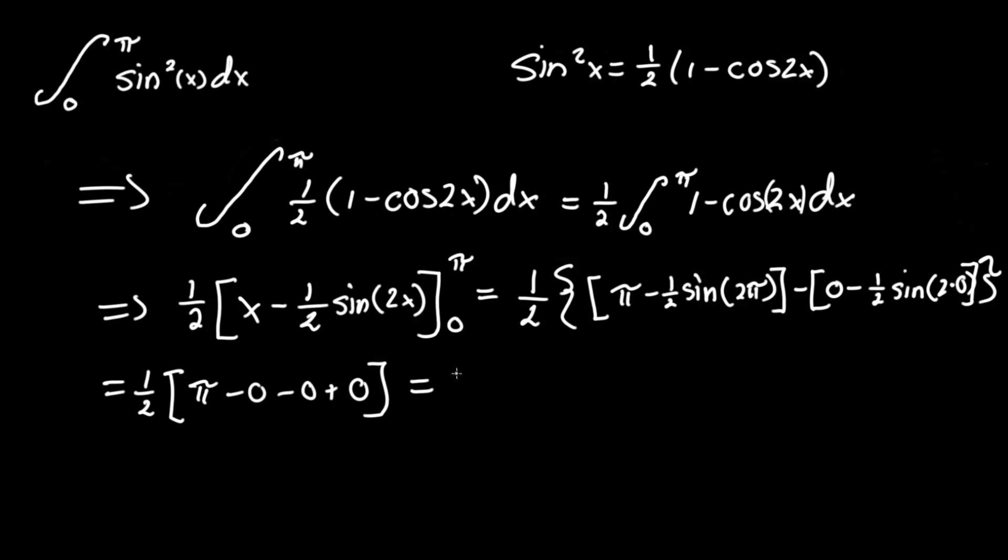And this equates to one half times pi, and that gives us the answer pi over 2. So the integral of sine squared x between 0 and pi is simply pi over 2. If you have any questions, please leave them in the comments below, and good luck.